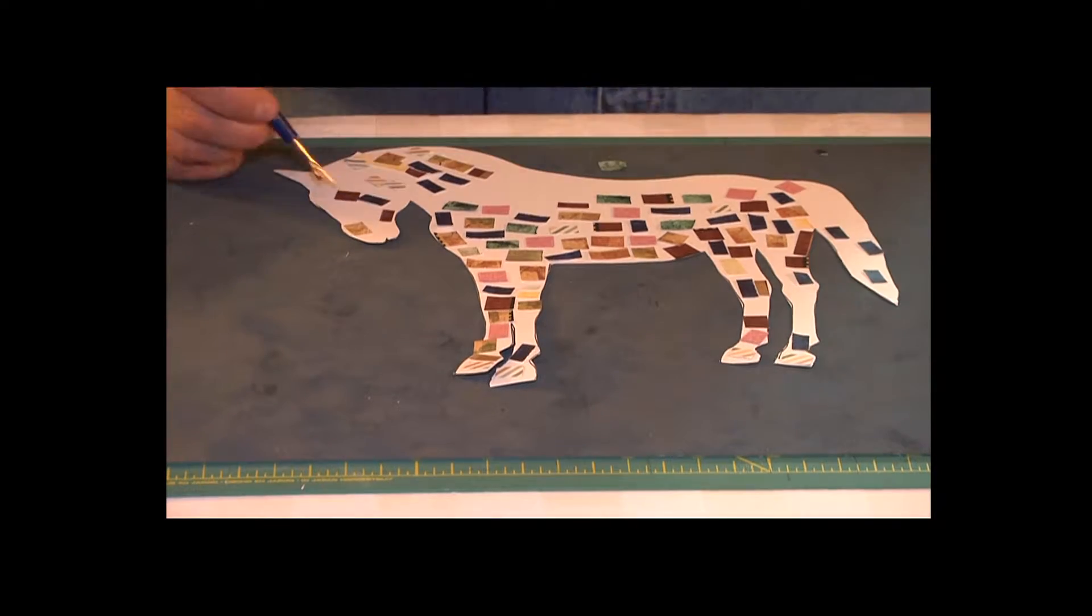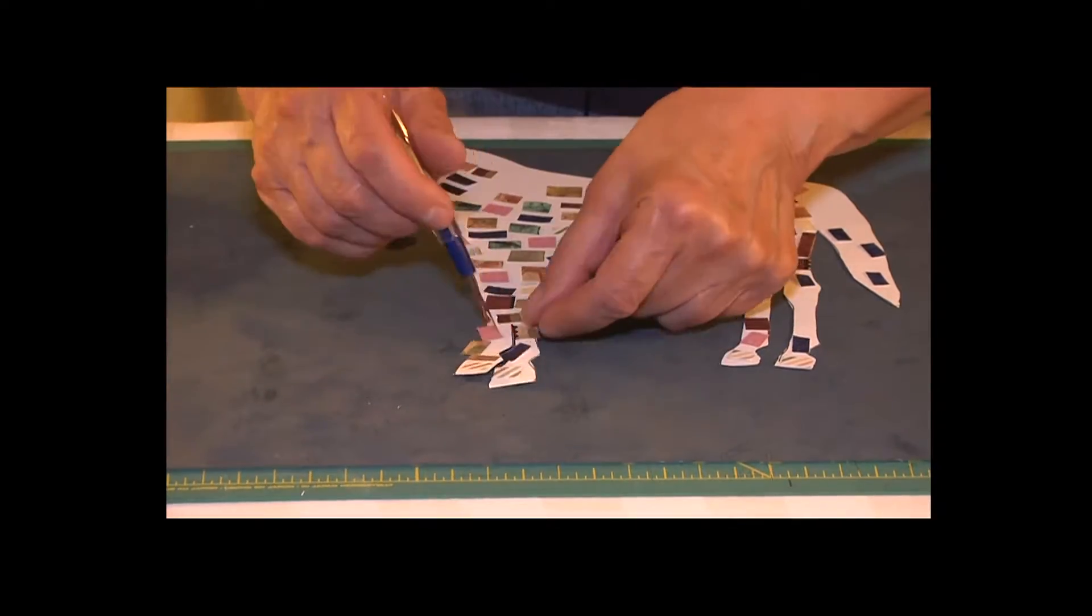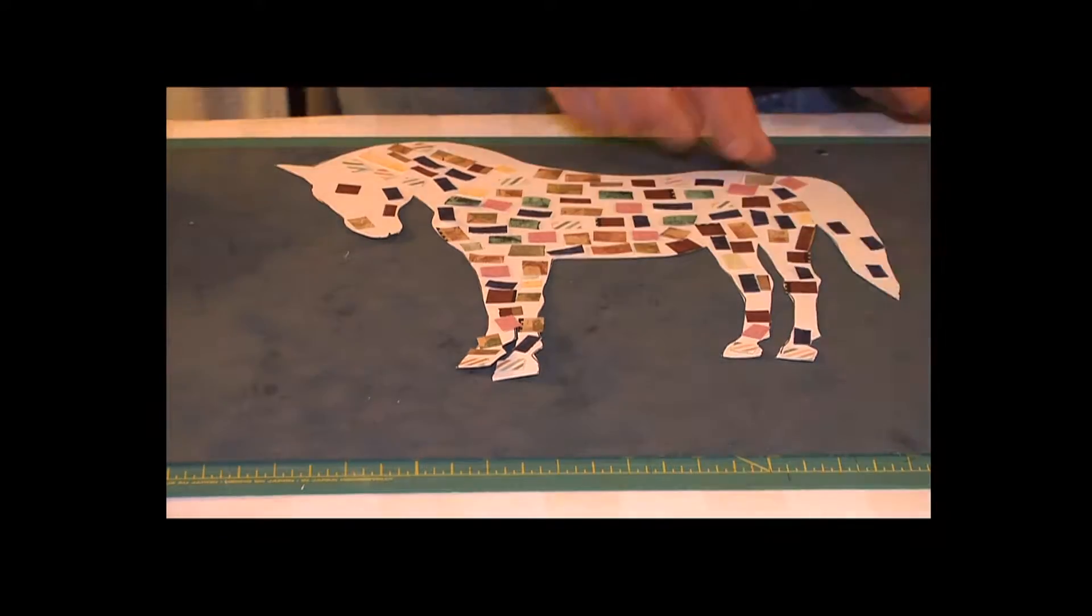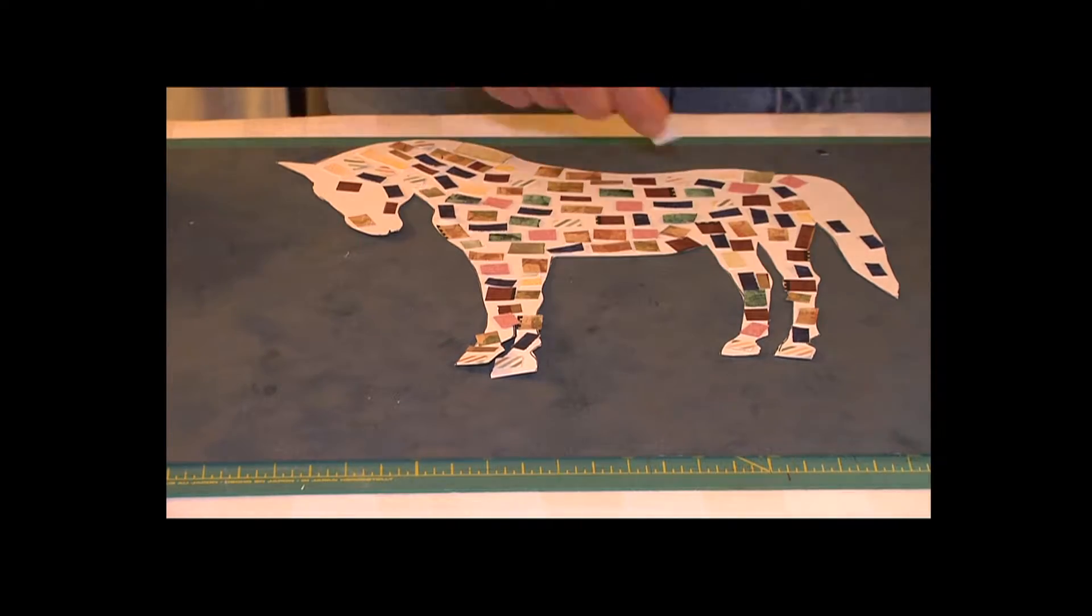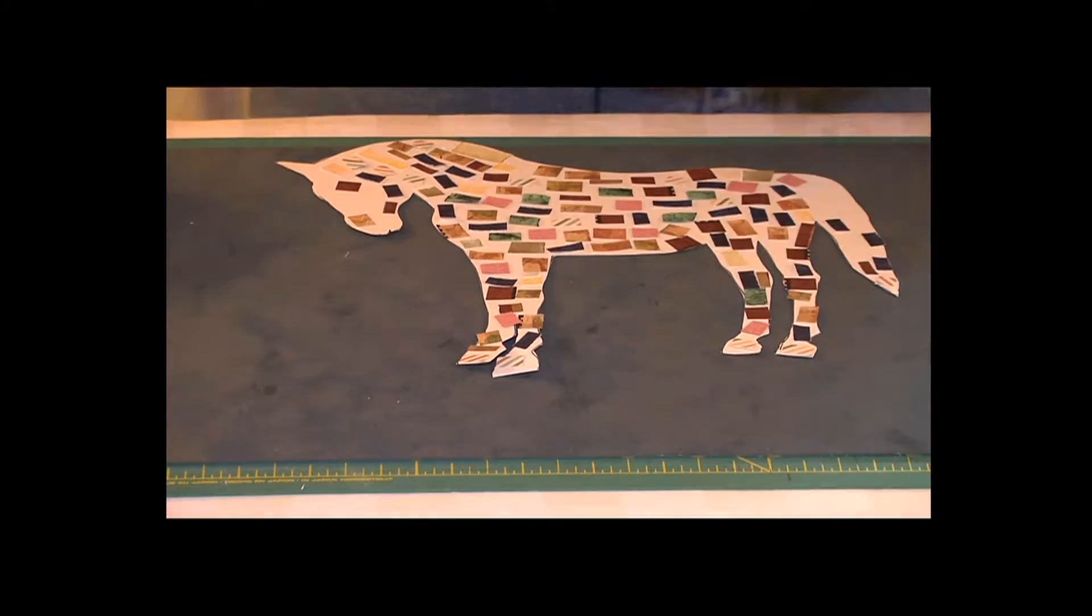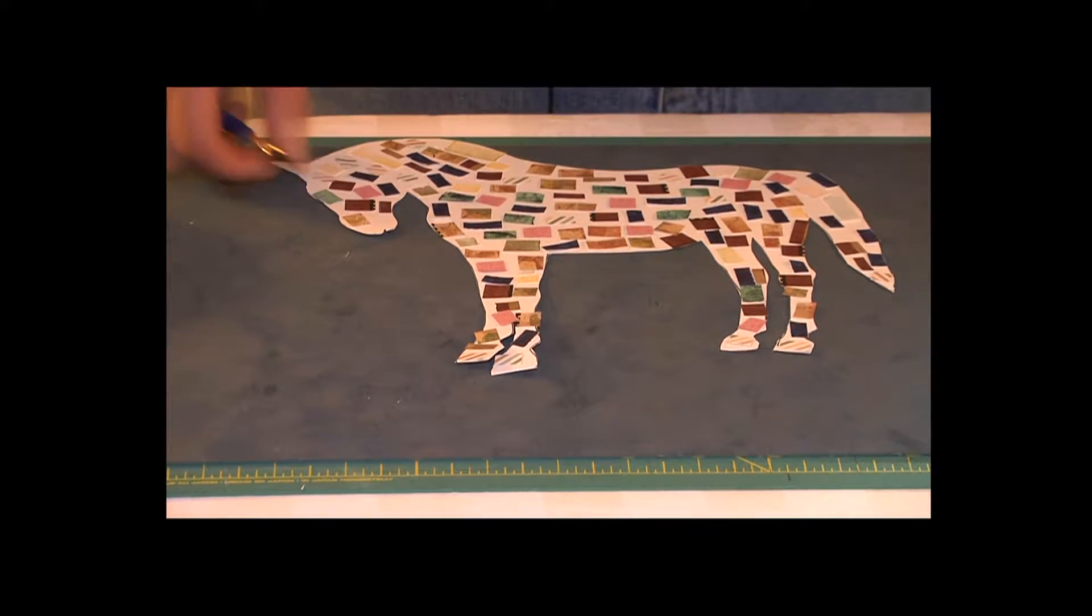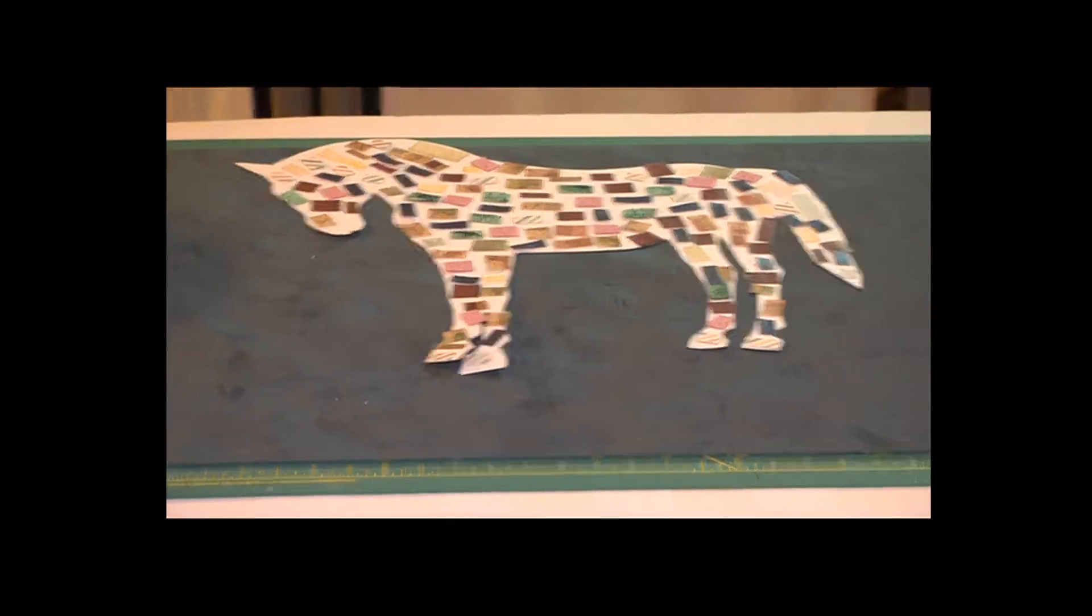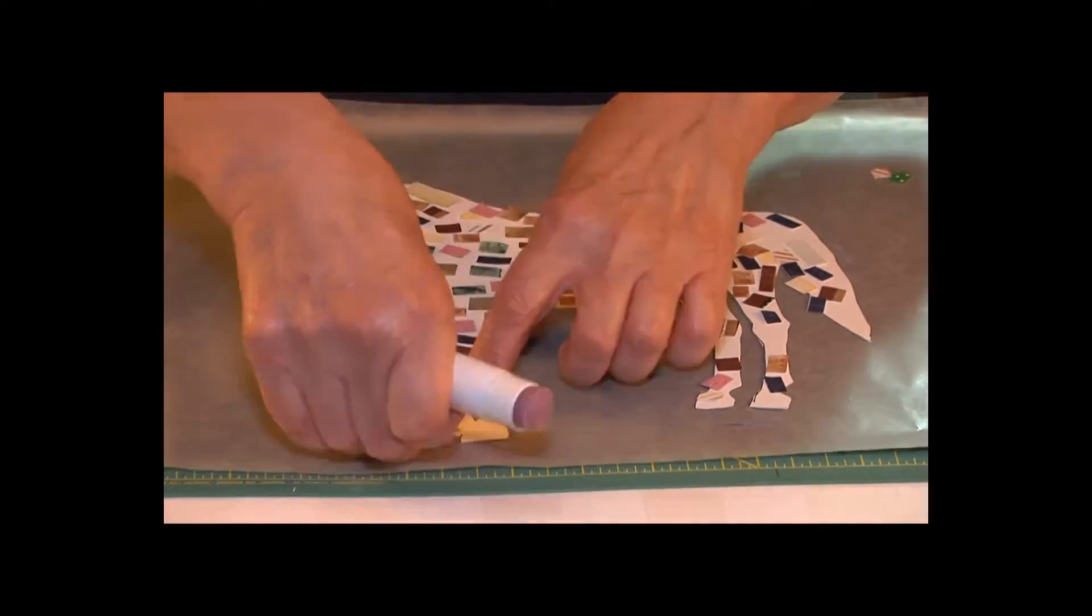The Pony Express advertised for young, skinny, wiry fellows not over 18, must be expert riders willing to risk death daily, orphans preferred. One of the riders, Bill Cody, age 15, decided this was the perfect job for him and he ended up going down in history for something he had to do. He had to deliver the mail.